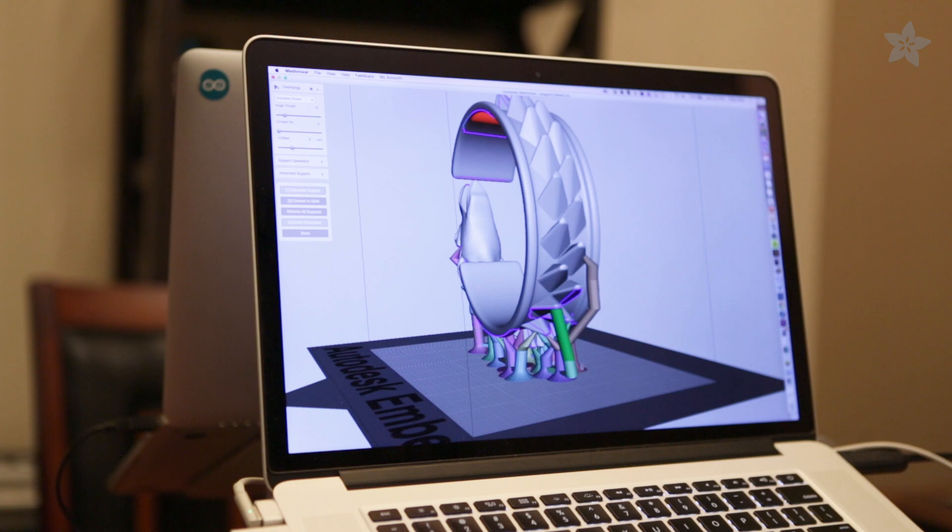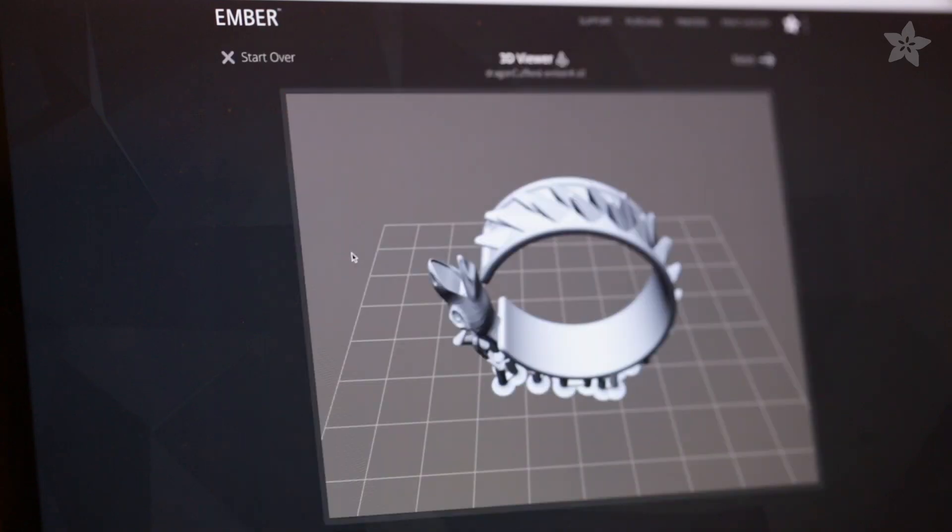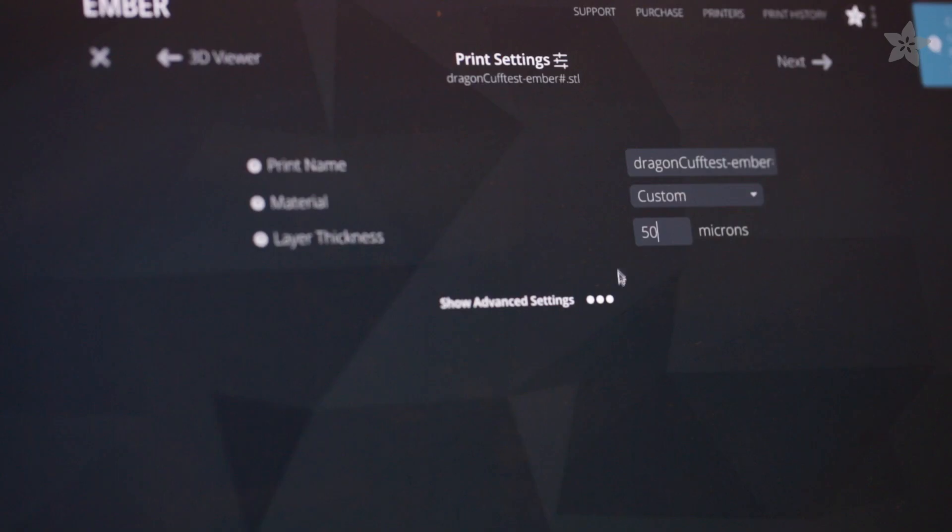You can also add your own custom supports to accommodate for any overhangs. Next up, we're going to need to slice the model up for printing. This is done through the Ember printer website. Here you can preview models to make sure everything fits correctly.